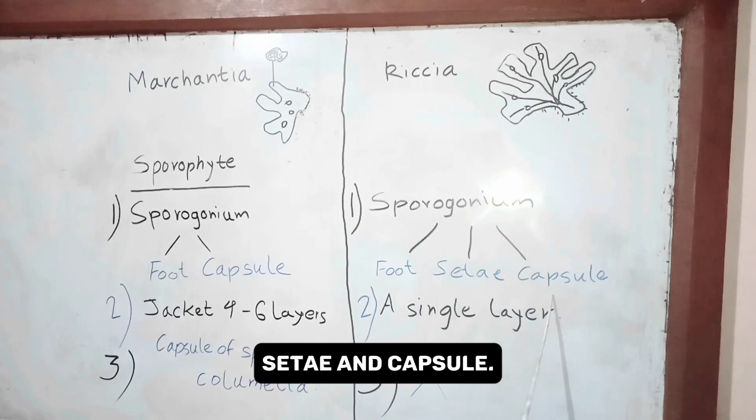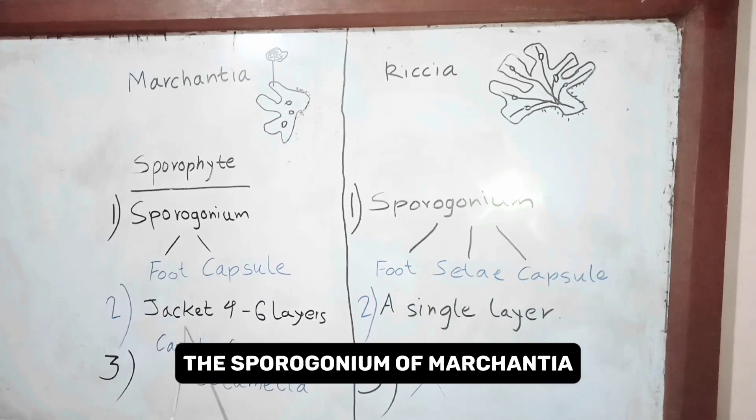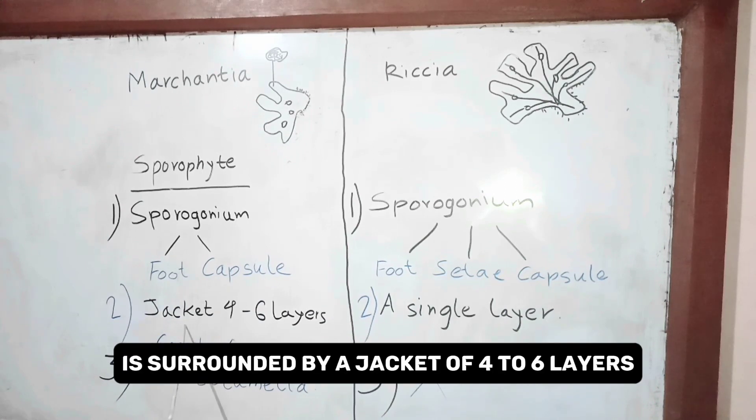Today we are going to talk about the differences between the sporophyte of Marcensia and Rhysia. The sporogonium of Marcensia contains foot and capsule, whereas the sporogonium of Rhysia contains foot, seta and capsule.